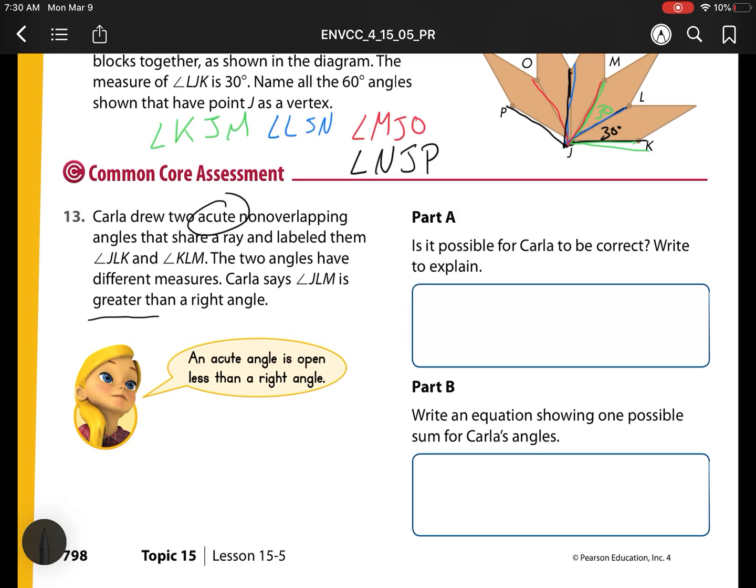Can we make it so two acute angles are bigger than a right angle? Here, let's say we have an angle like this, and then we have another acute angle like this. Each one is less than 90 degrees, but together they're going to be bigger than 90 degrees. So an example could be, we could say this was 50 degrees, and this was 60 degrees. So yes, it is possible for her to be correct.